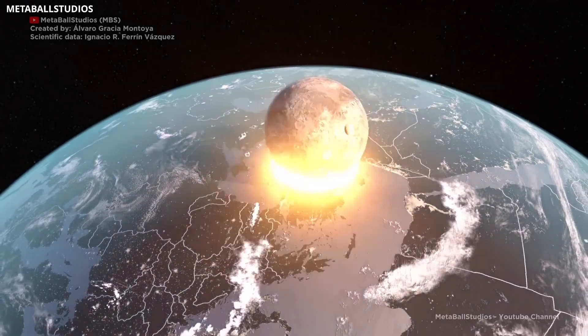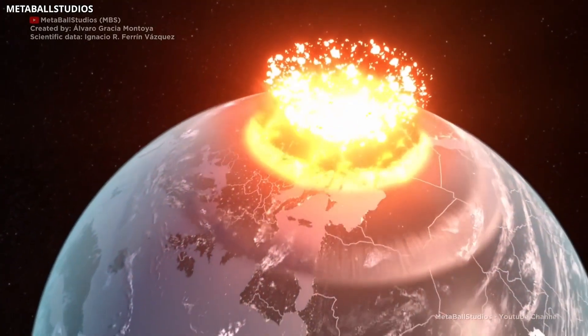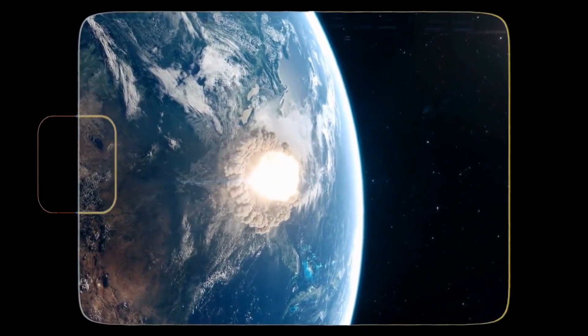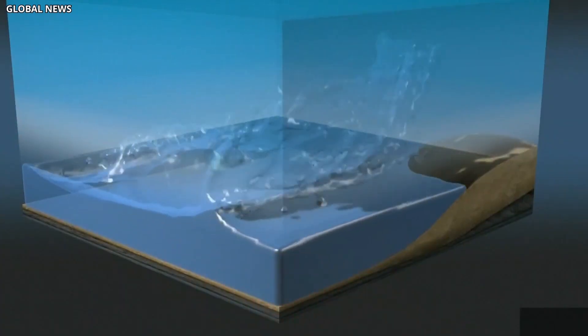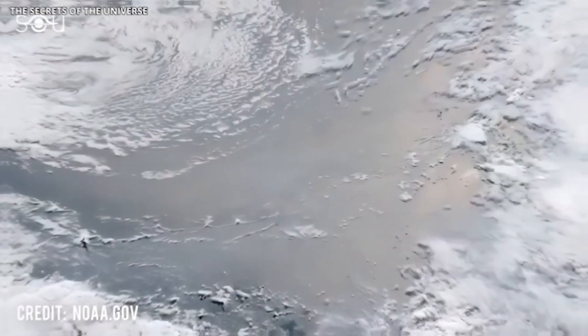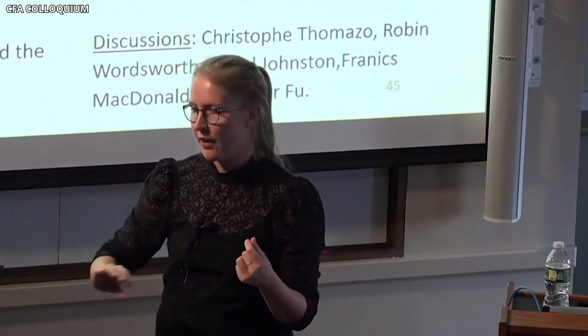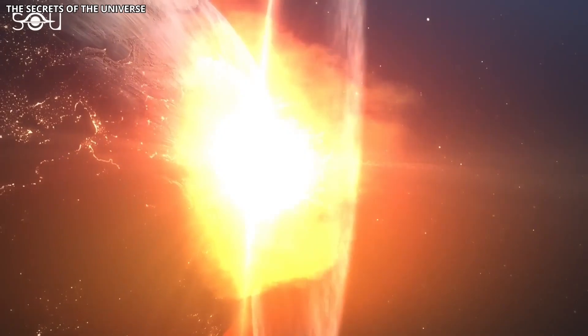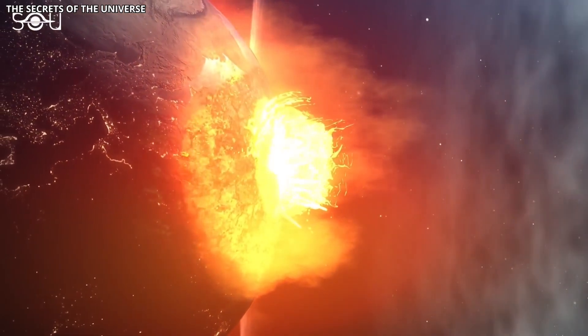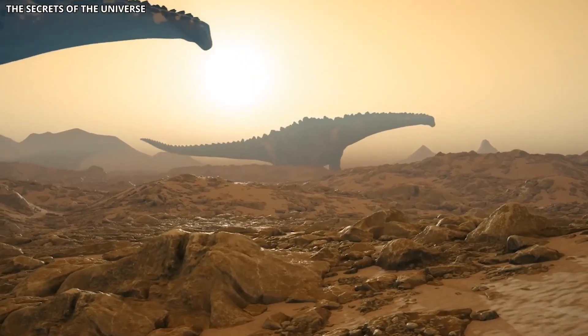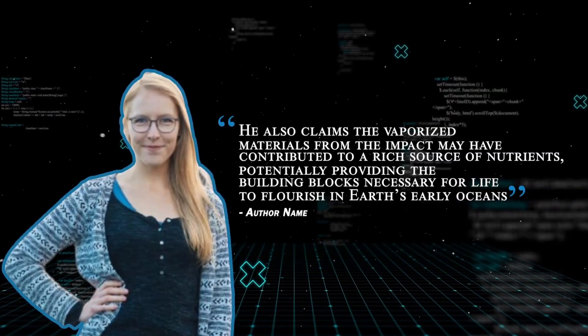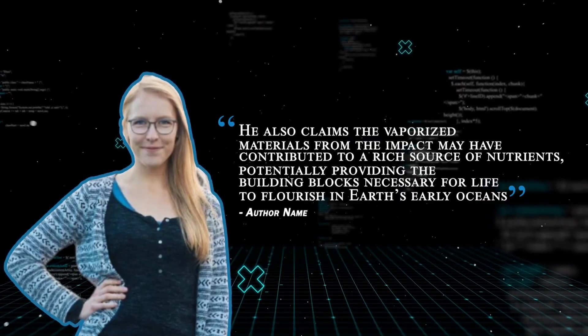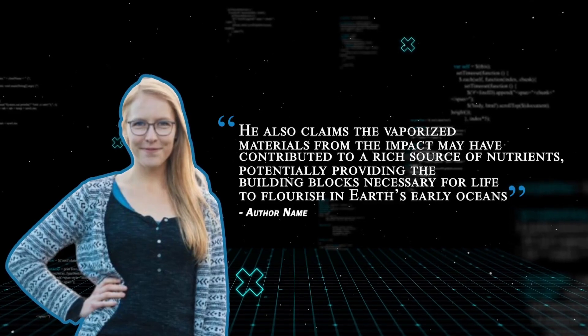When it struck, the impact was so powerful that it could have instantly vaporized the meteorite, sending a massive cloud of rock vapor and dust into the atmosphere and darkening the skies. Also, the intense heat from the meteorite's strike could boil the upper layers of the oceans. While such an impact would have been devastating, Nadja Draban's study suggests that the S2 meteorite's effects may not have been entirely destructive. The immense heat and chemicals released could have created conditions that paradoxically helped life form and thrive. He also claims the vaporized materials from the impact may have contributed to a rich source of nutrients, potentially providing the building blocks necessary for life to flourish in Earth's early oceans.